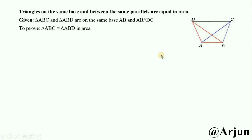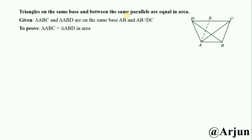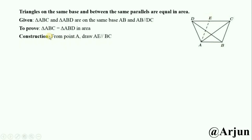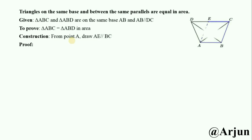To make the proof, we can make a construction. Draw a line such that BC lines are parallel. The construction is: from point A, draw AE parallel to BC.